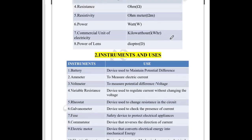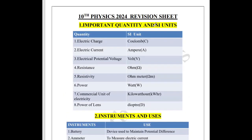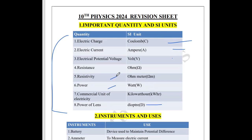Now let's go into this revision sheet. Firstly, I have put all the SI units. You can see there are eight quantities in your entire textbook. Out of these, eight are very important — especially diopter, power of lens, power, and resistivity. Obviously, all these eight are important.